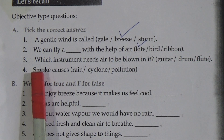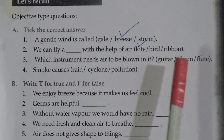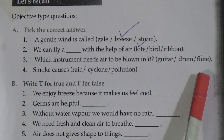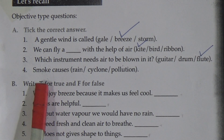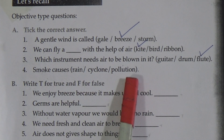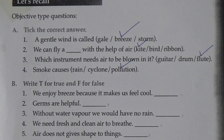Number 3: which instrument needs air to be blown in it? Number 4: smoke causes — rain, cycle, cyclone, or pollution. We know that smoke creates pollution, so smoke causes pollution. Put the tick mark on pollution.